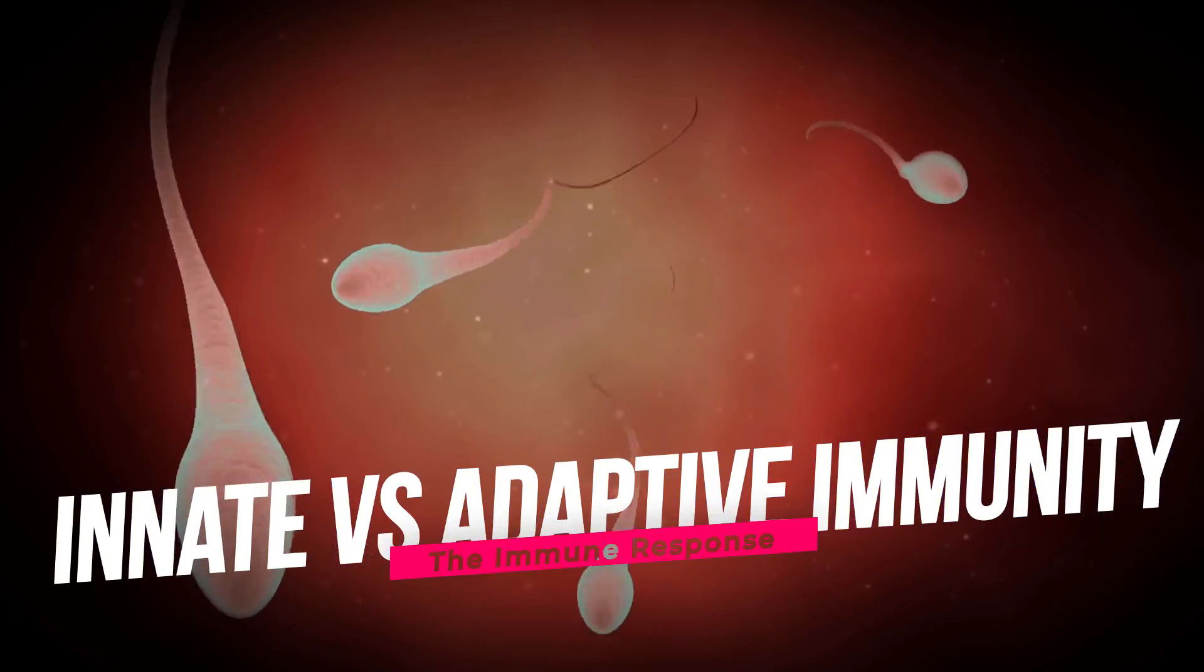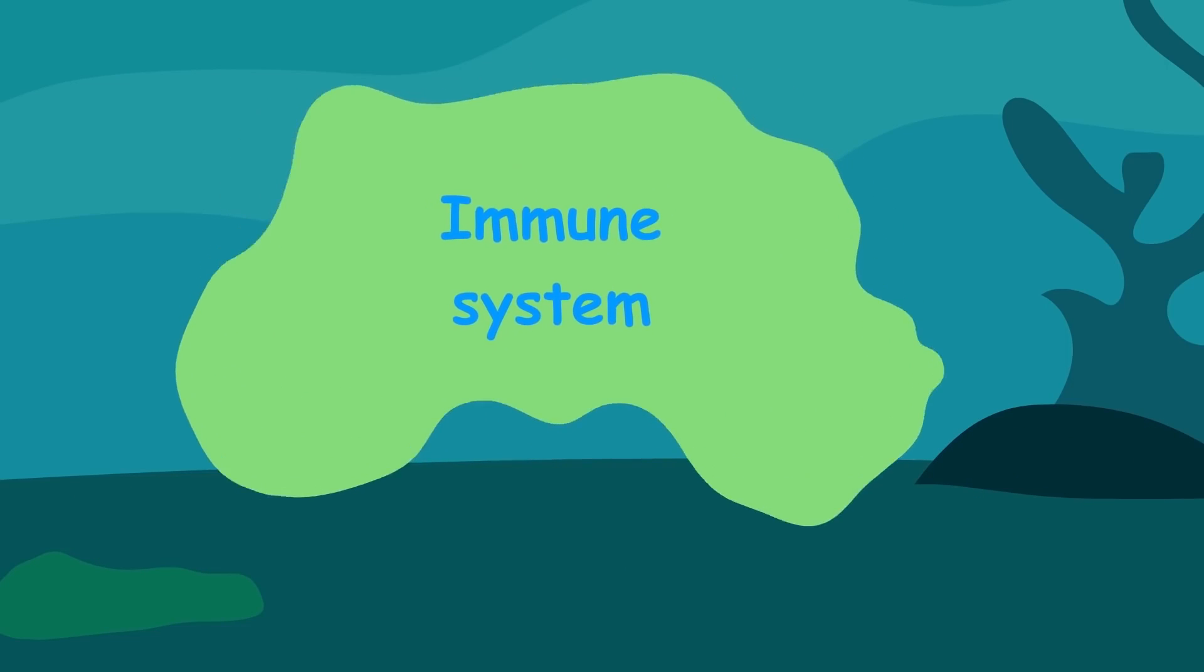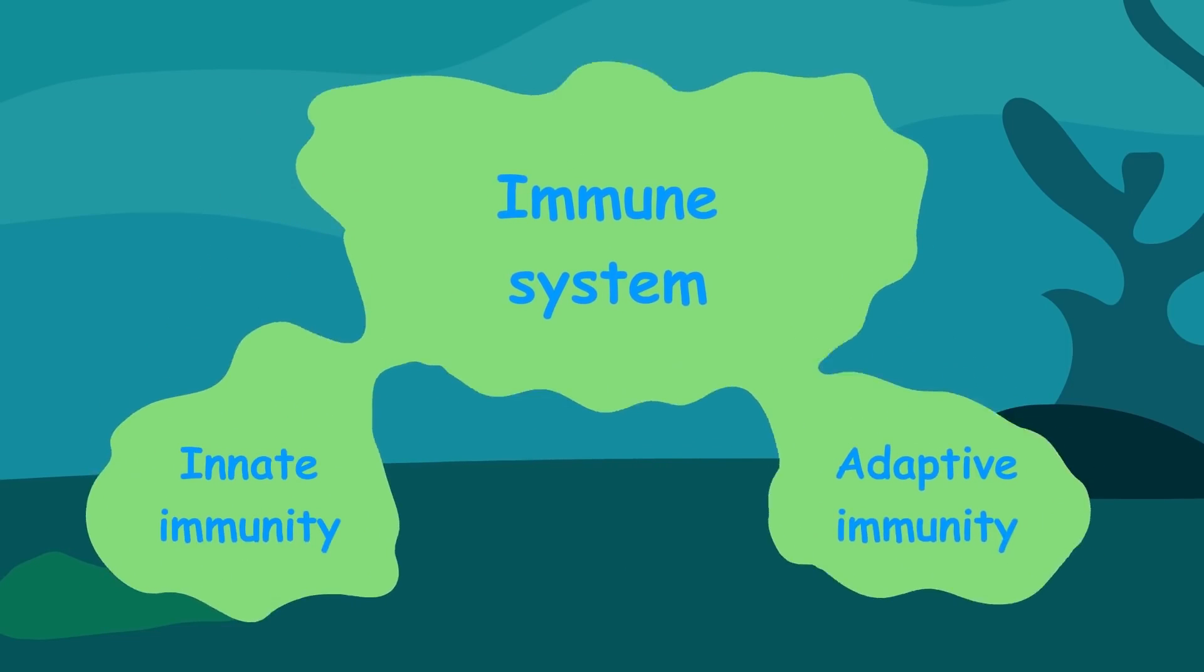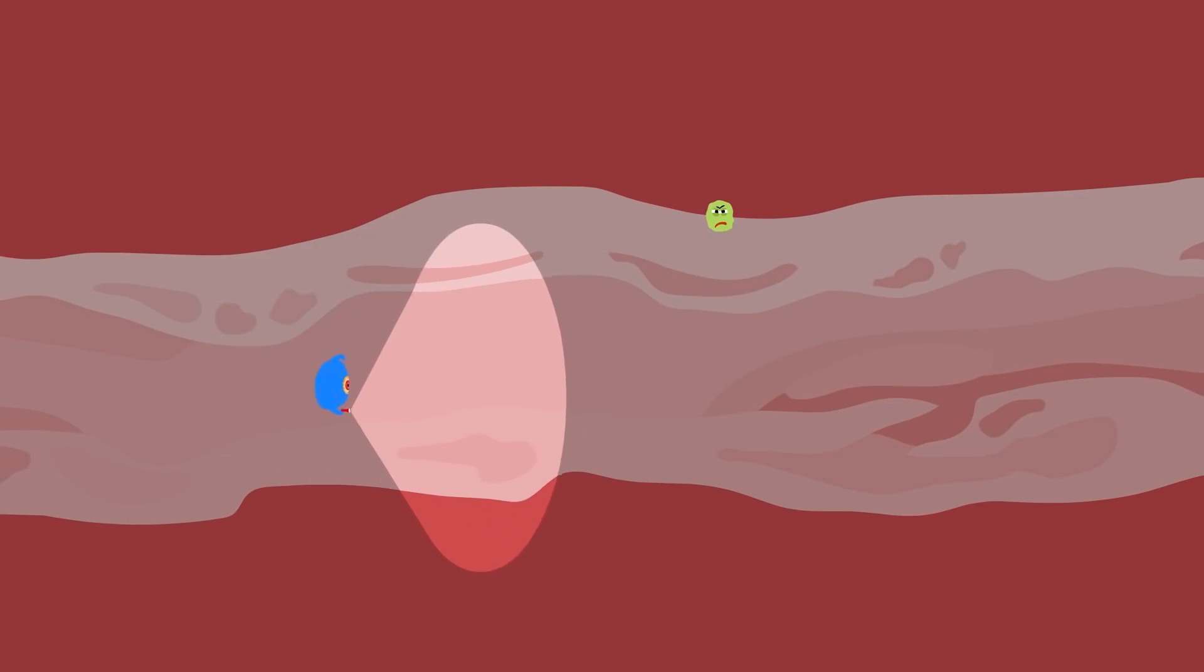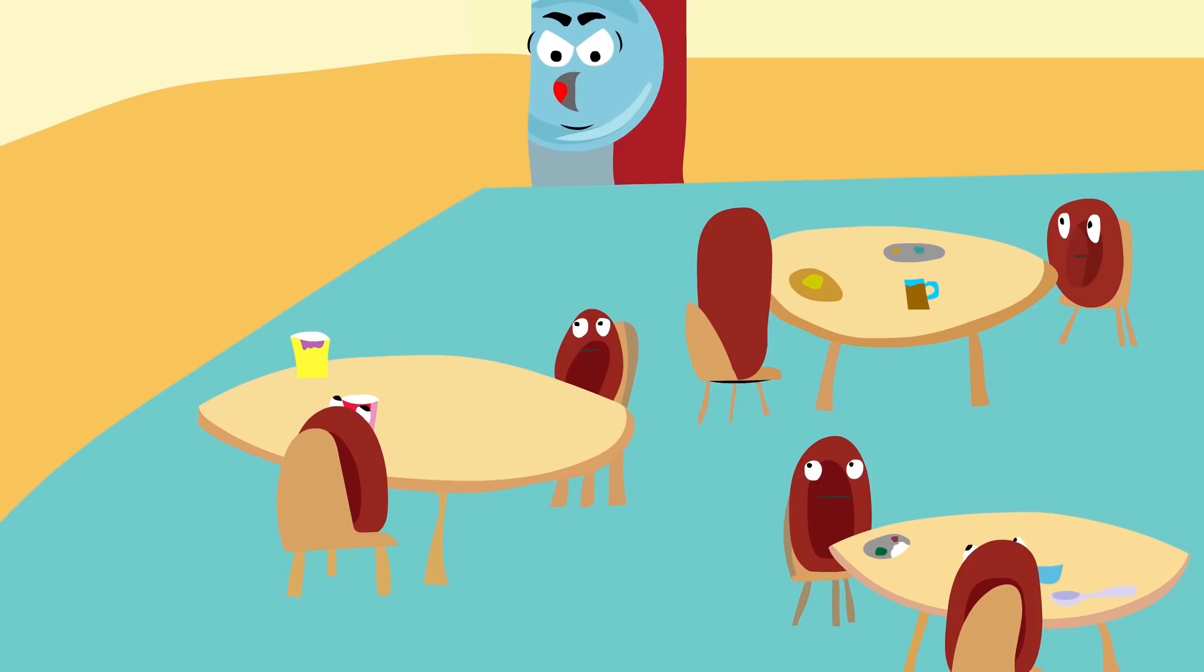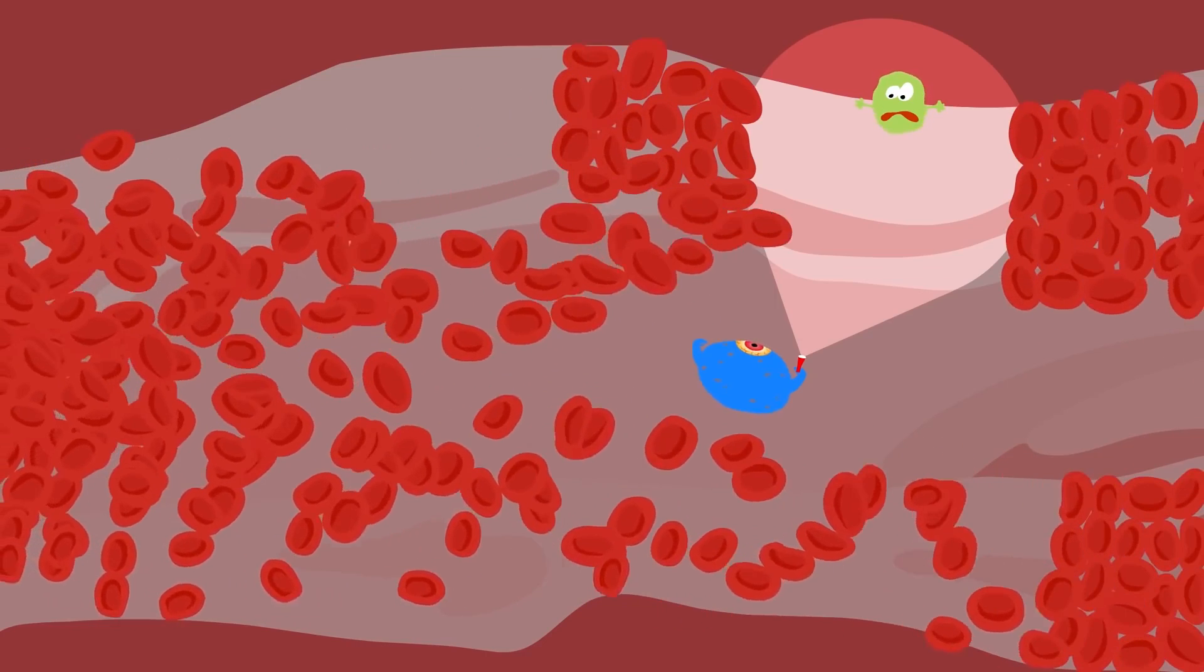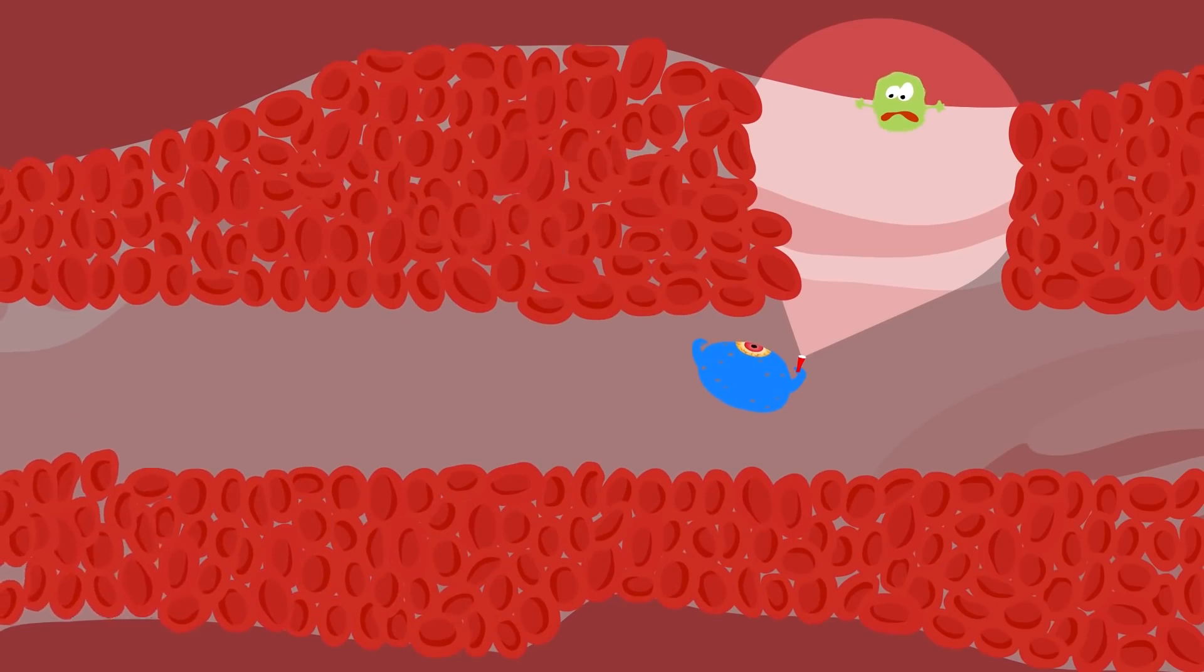The Immune Response – Innate vs. Adaptive Immunity. The immune system can be divided into two main components – innate immunity and adaptive immunity. Innate immunity, which is also called nonspecific immunity, is the body's first line of defense against pathogens and is present from birth. It includes several specialized cells and molecules that can quickly recognize and respond to invaders, often before the body even realizes it has been infected.